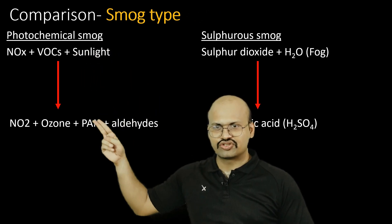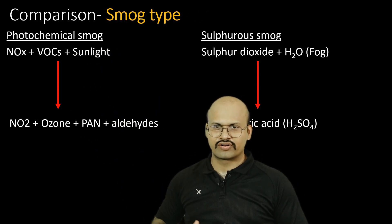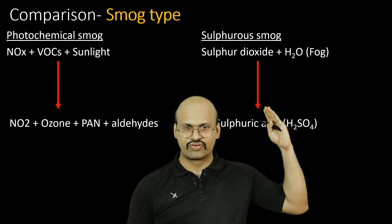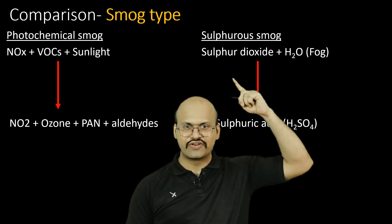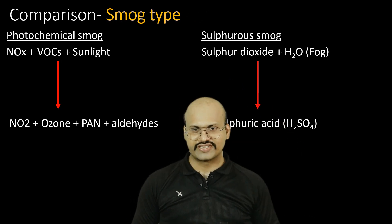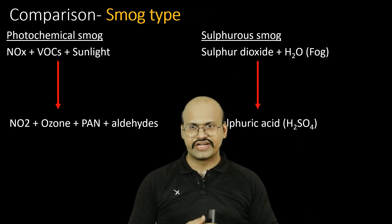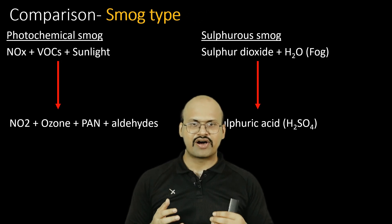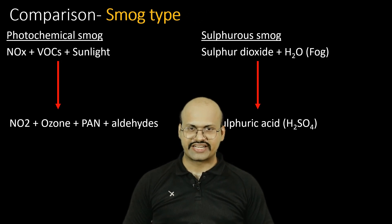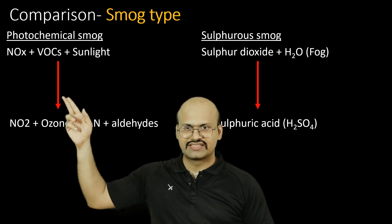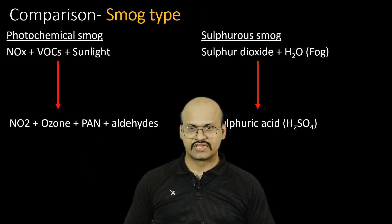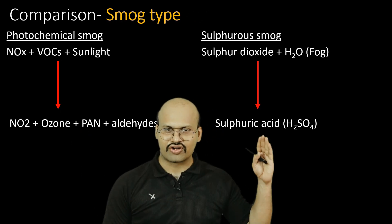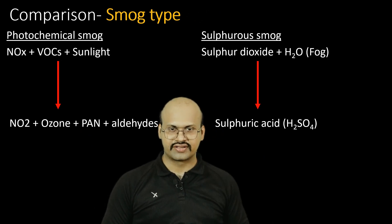Photochemical smog is called summer smog, while sulfurous smog is called winter smog. Sulfurous smog requires fog, which occurs in winters, while photochemical smog requires sunlight, which is amply available in summer. Photochemical smog occurs in the afternoon, while sulfurous smog occurs in the morning.